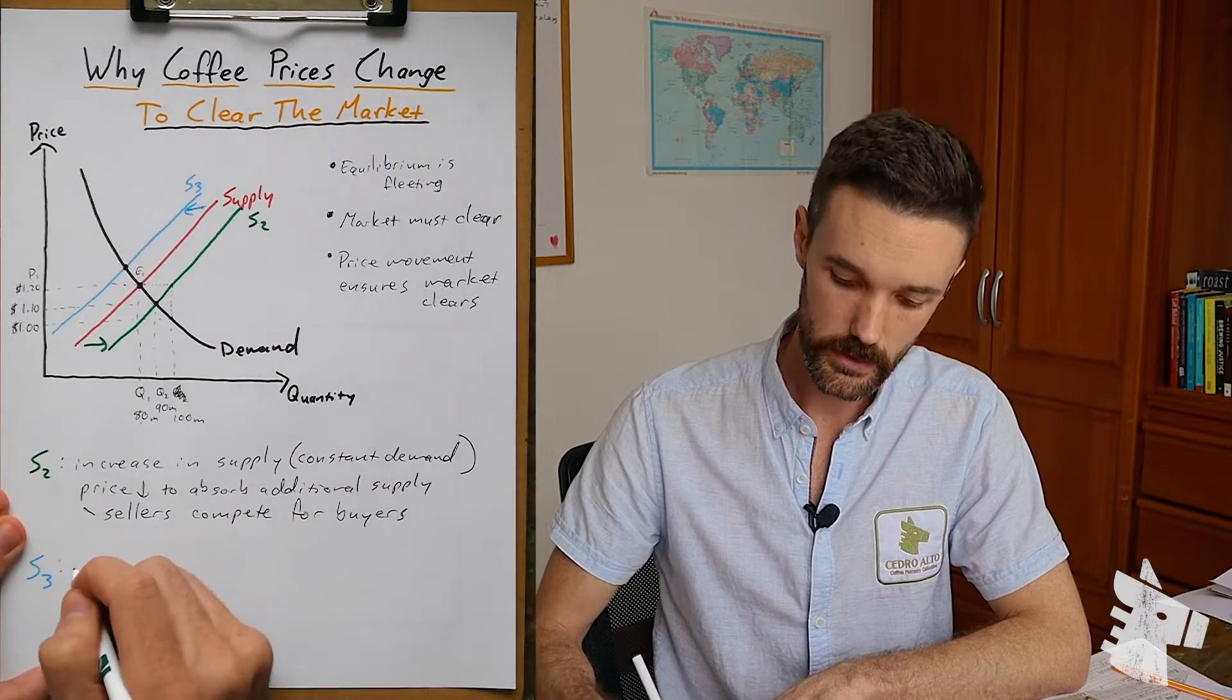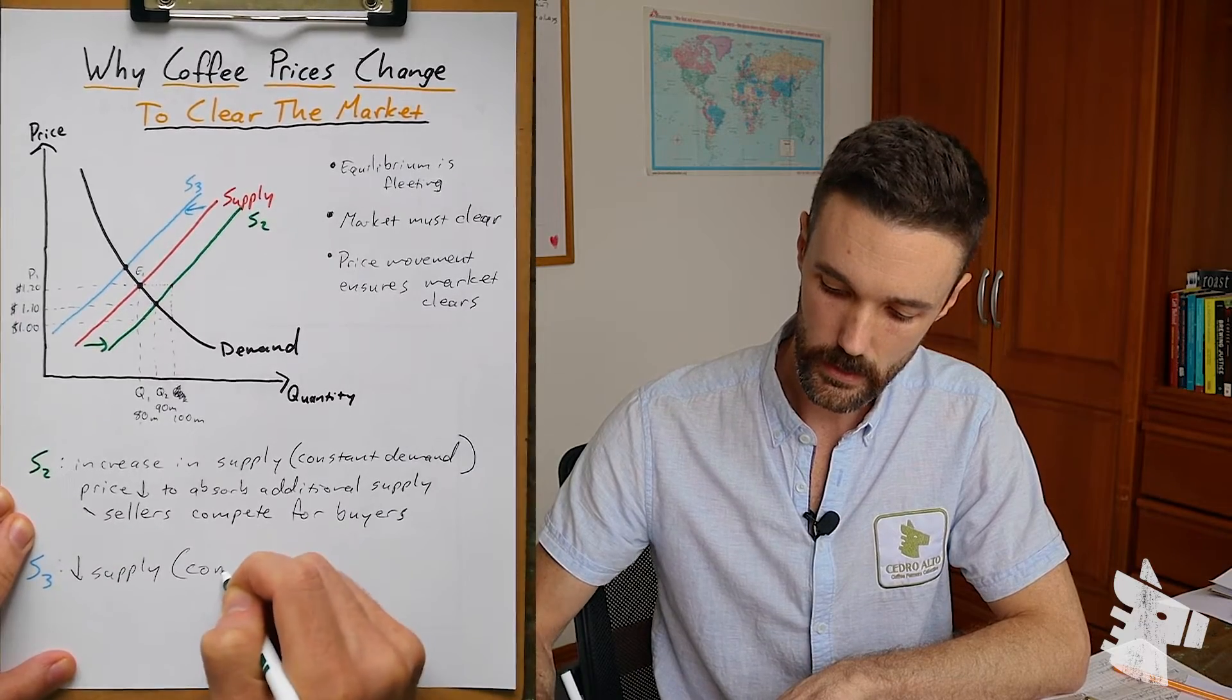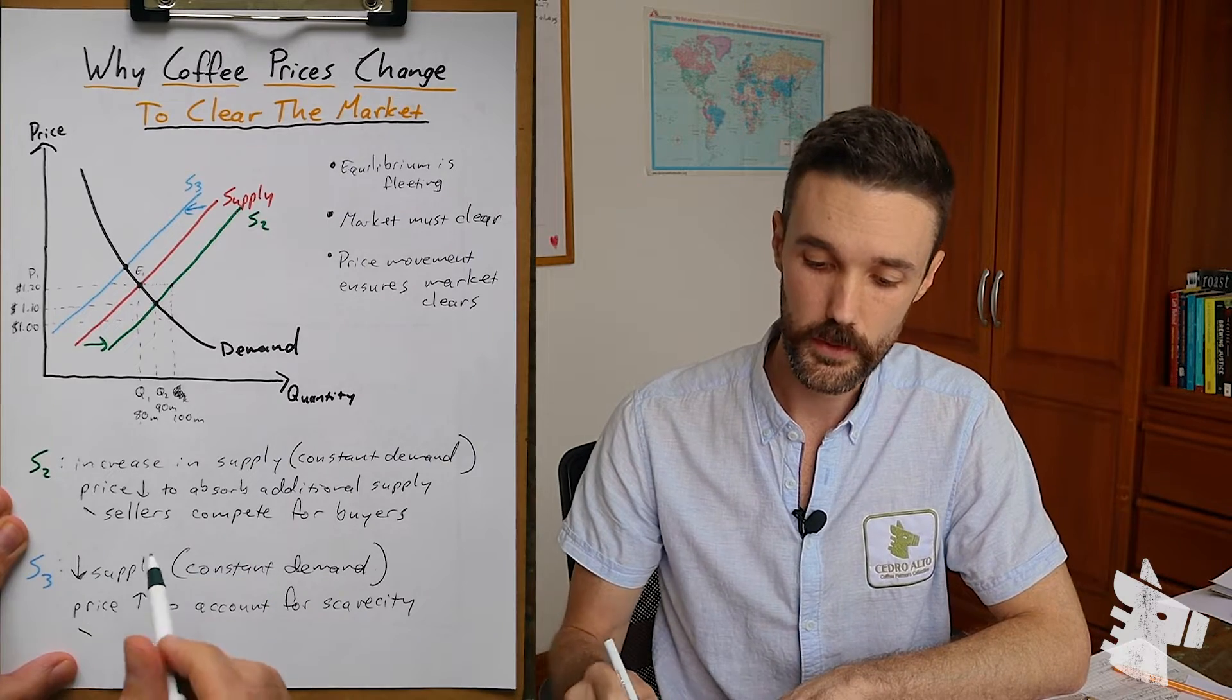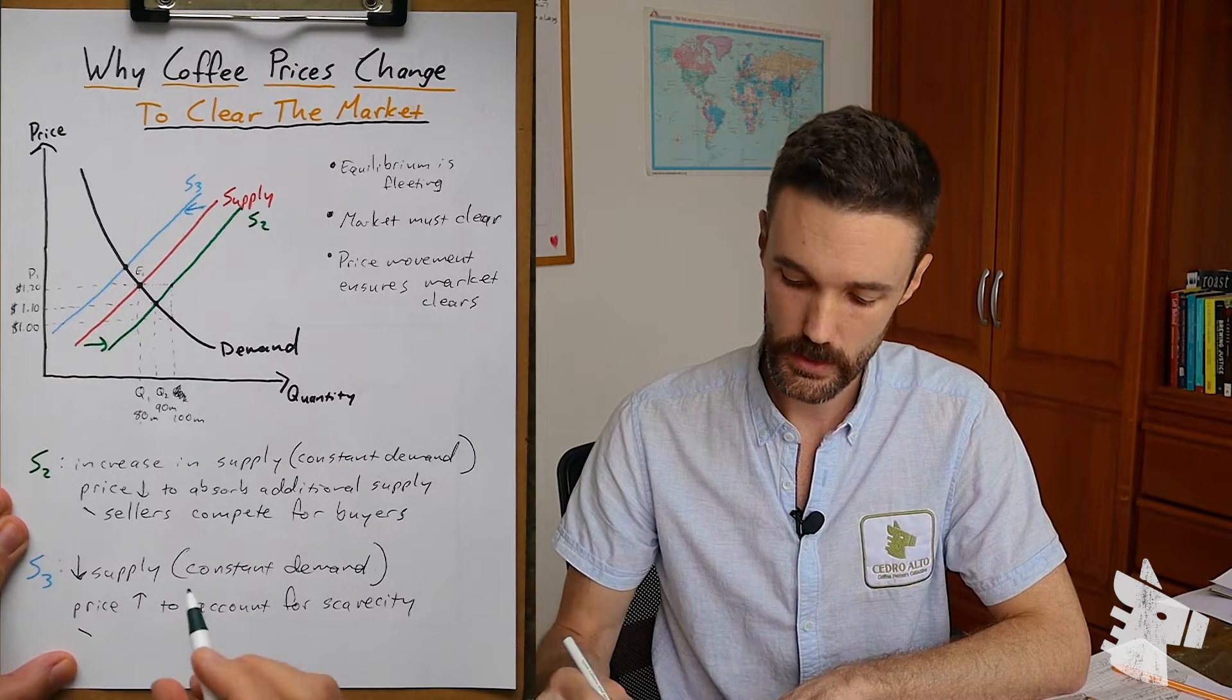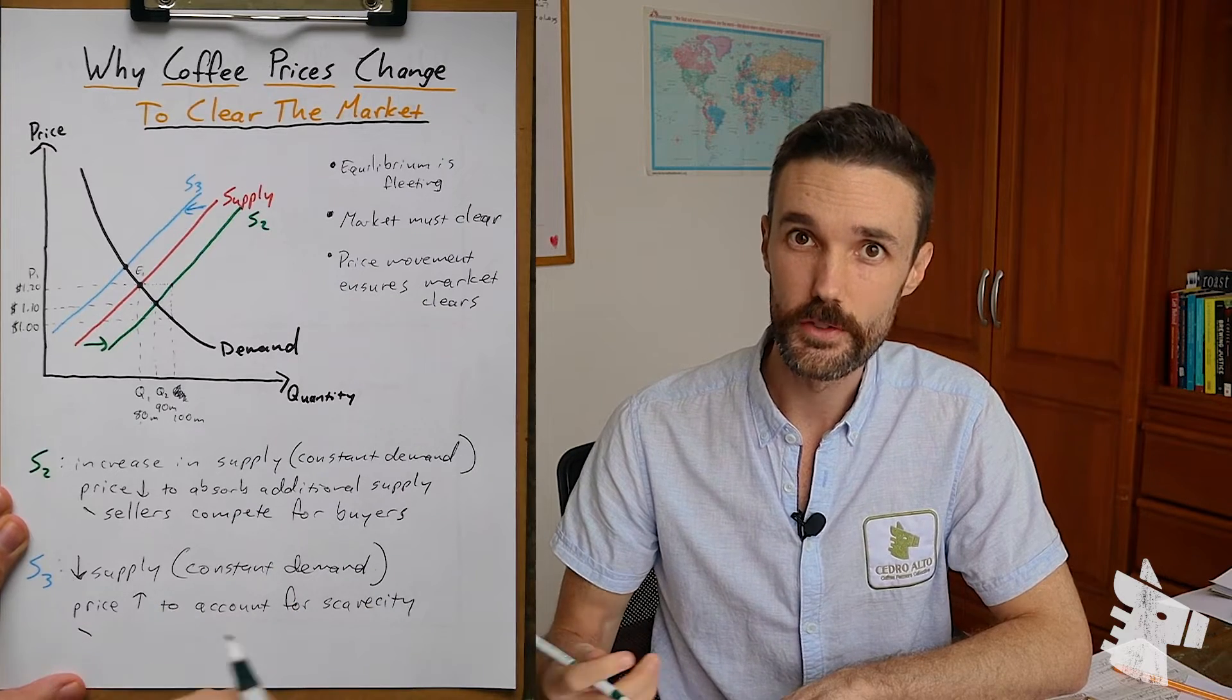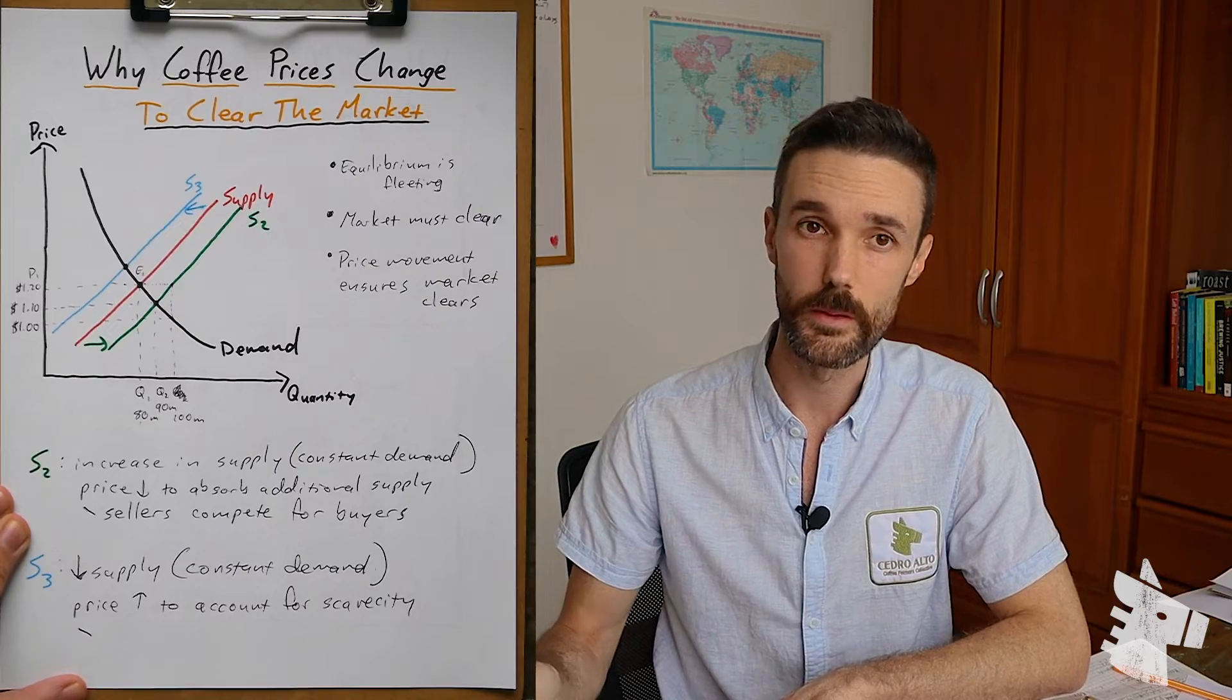So in this case, a reduction in supply with constant demand, the price must rise to account for scarcity. In contrast with the first example, when supply rose, in this case, when supply contracts, buyers must compete amongst themselves for the supply that's available.